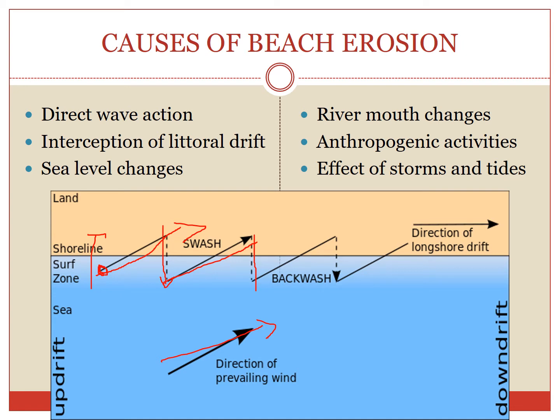Next is sea level changes. The change in the sea level will also affect the erosion of the coastline. A fall in the sea level will result in reduced erosion, as the depth of the water offshore will be reduced and thus reducing the efficiency of the waves to attack the coast. Next, we move across to river mouth changes. River mouths are prevalent only in areas where the rainfall is heavy and where forest cover is virtually non-existent.